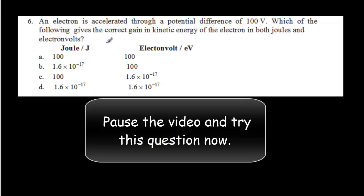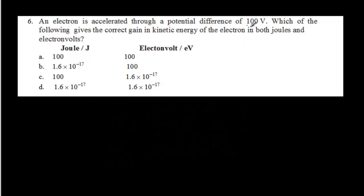Here's an IB question asking really the same thing. So an electron is accelerated through 100 volts. Therefore, it should gain 100 electron volts of energy. And so it's got to be one of these two. Which of the following is the correct gain in kinetic energy of the electron in both joules and electron volts? Well, it's not very many joules. Remember, electron volts are very small units. So your correct answer has to be B here.